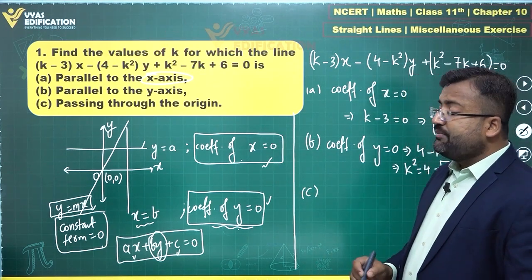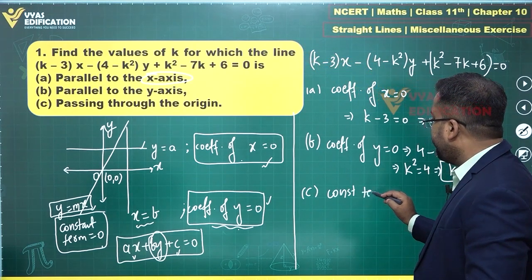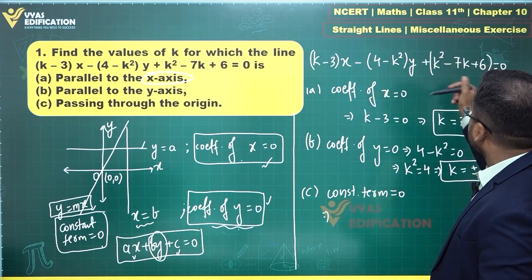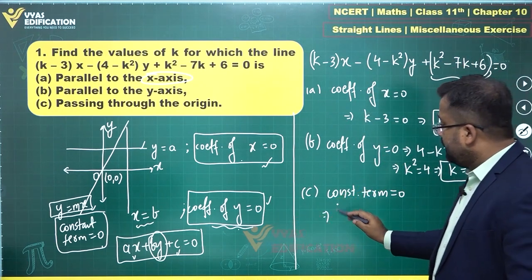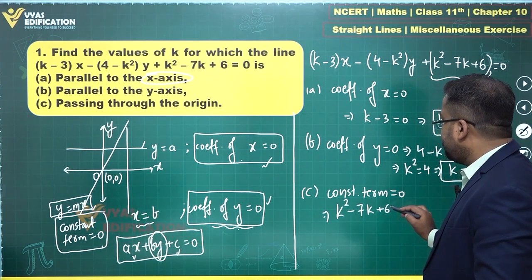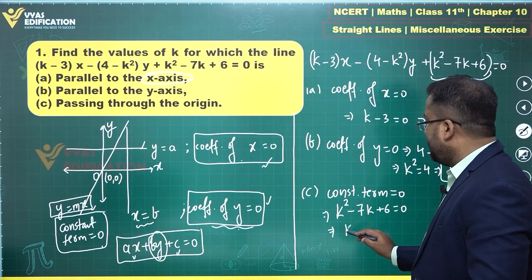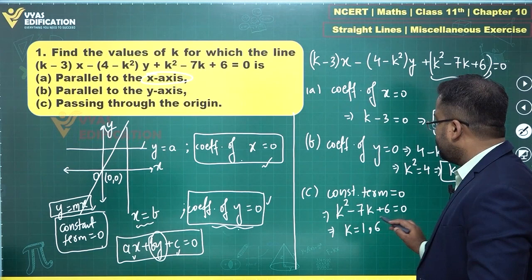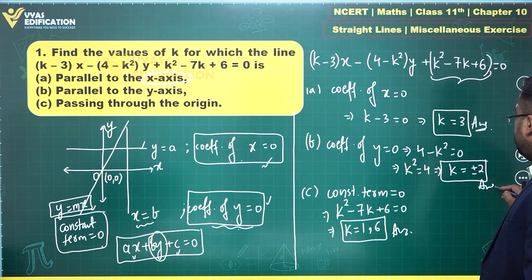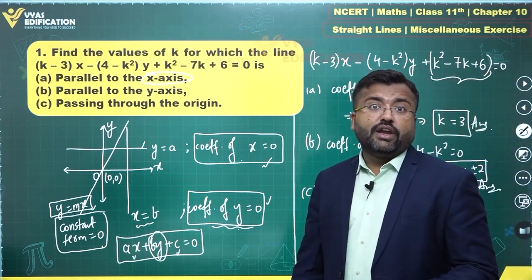For part (c), line passing through the origin — constant term = 0, so k² − 7k + 6 = 0. The roots of this quadratic are k = 1 and k = 6. Those are the two possible values of k for this part, completing the full solution of Question 1.